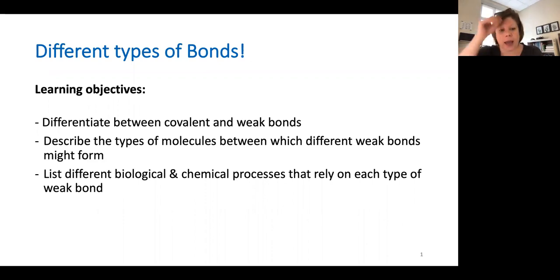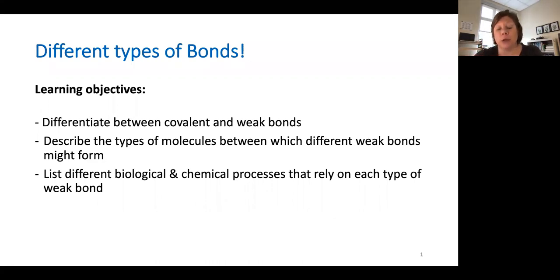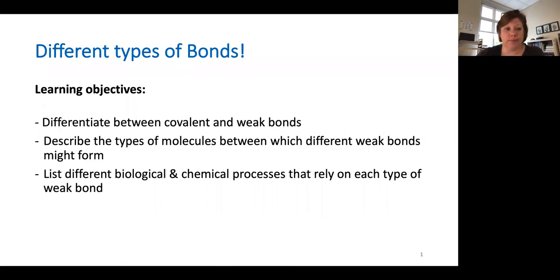And I want us to be able to list different biochemical processes that might rely on each different type of weak bond.